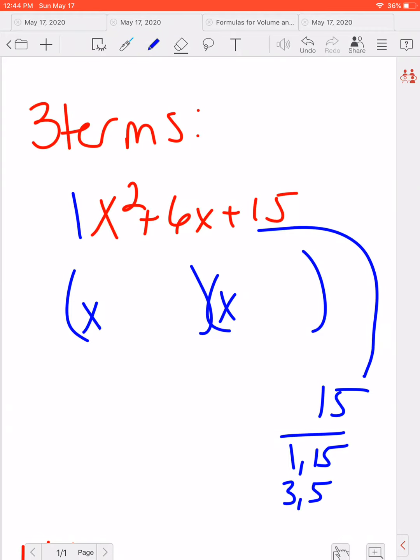And I believe this is not supposed to be a 15. This is supposed to be a 5. I think I just wrote that in incorrectly because that's not factorable. So if we look at 5, we have 1 and 5. And that's really it. Those are the only things that multiply to be 5. So we're going to put a 1 and a 5 here.